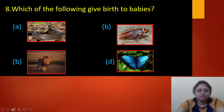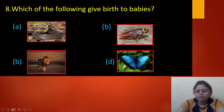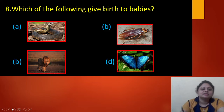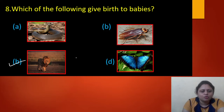Next question: which of the following gives birth to babies? Snakes, cockroach, lion, or butterfly? The answer is option B — lion. Lions are mammals, so they give birth to babies and feed them milk.